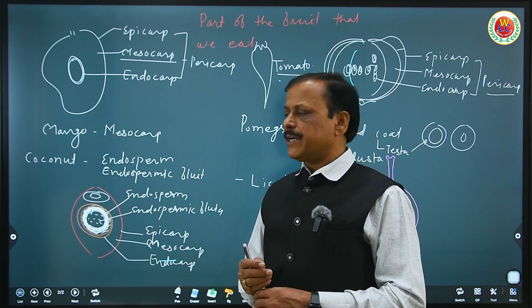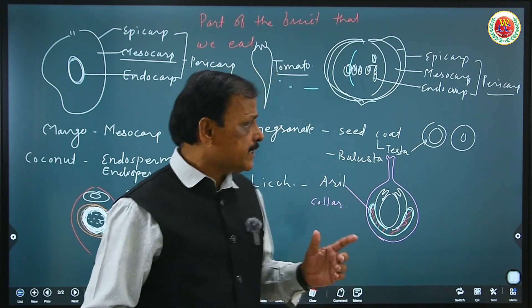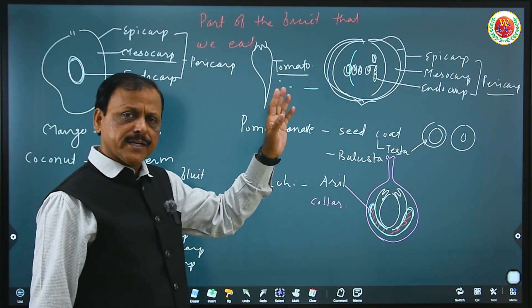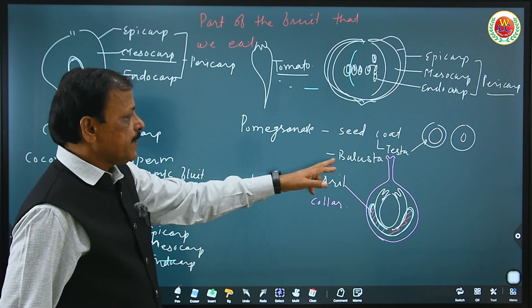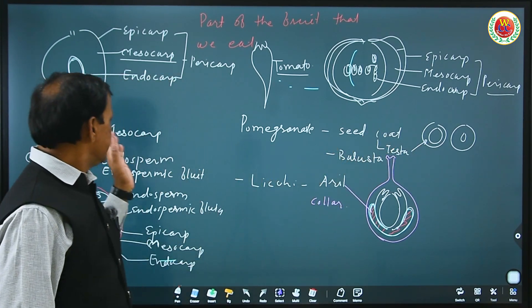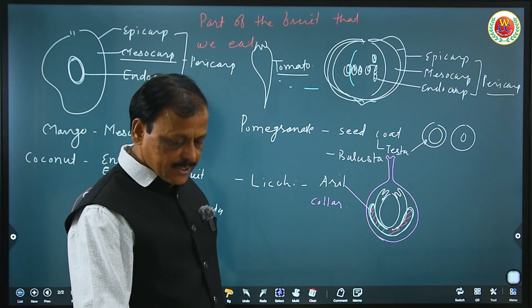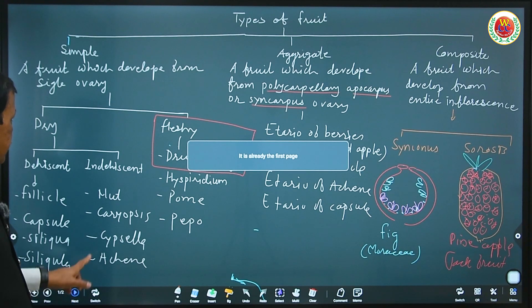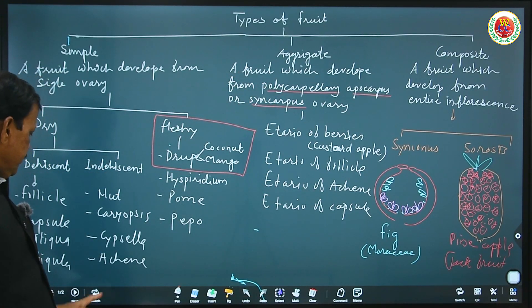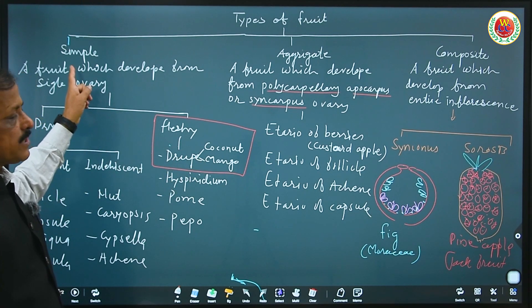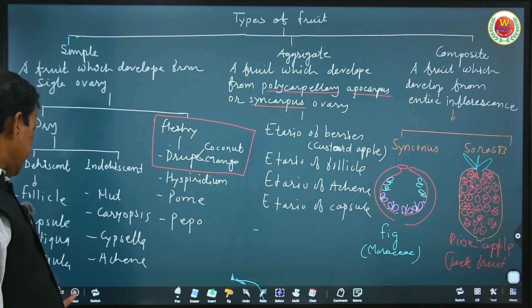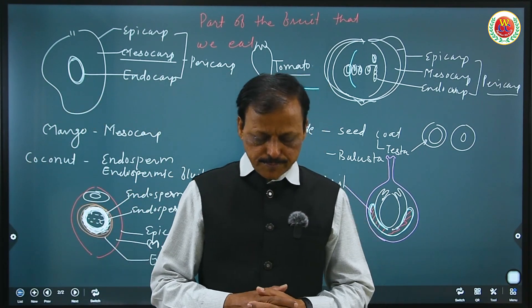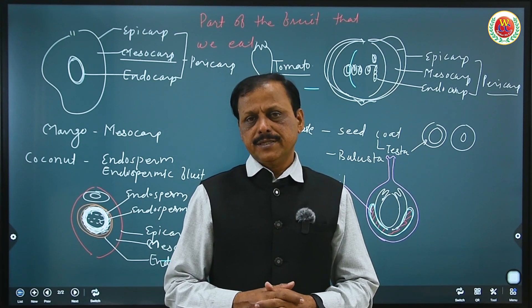Please remember which part of lychee is eaten — aril. This question can be asked about which part of which type of fruit is eaten. The edible parts summarized: we eat mesocarp, endocarp, pericarp, or entire pericarp — or the epicarp, mesocarp or endocarp — or endospermic fluid, or aril, or balusta (testa). These are the different parts of fruits we eat, and this question can be separately asked. In this video we learned types of fruits, and that mango and coconut as fleshy fruits stand under simple fruit.